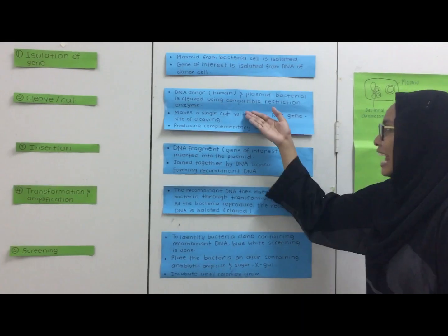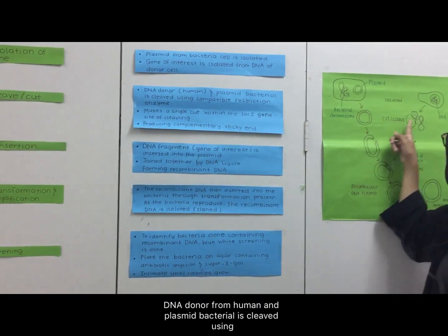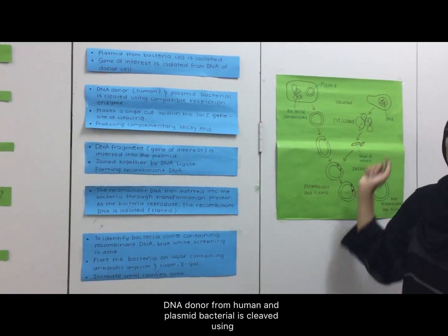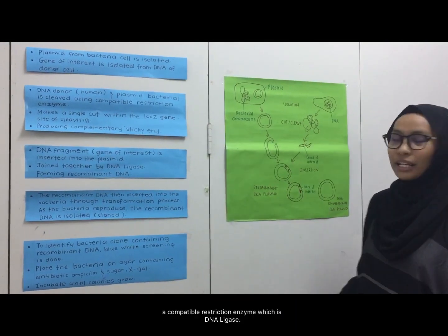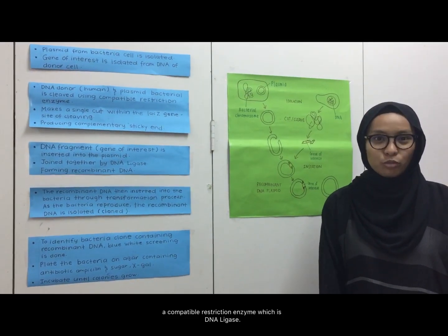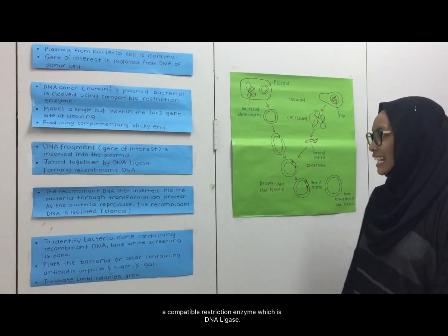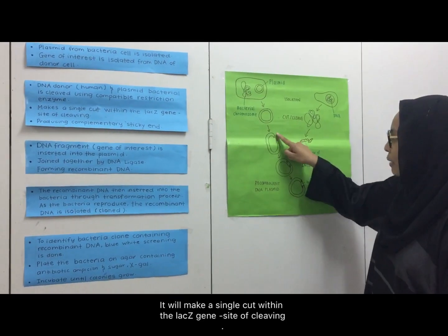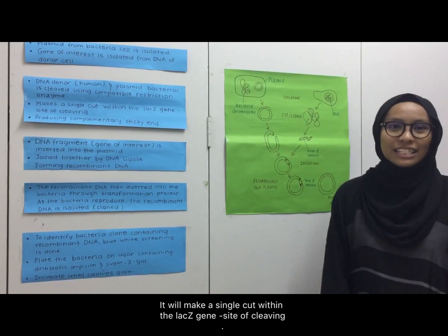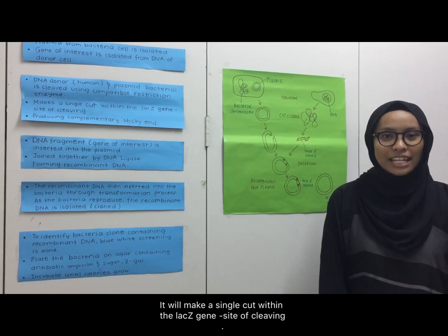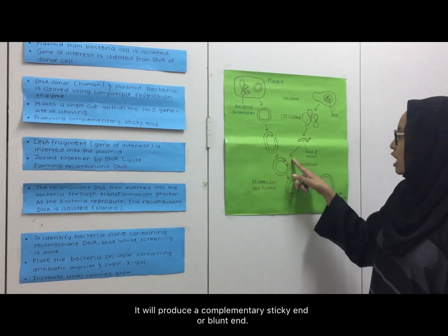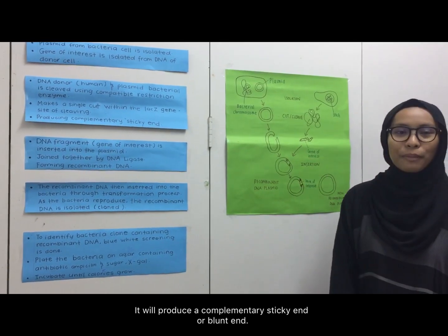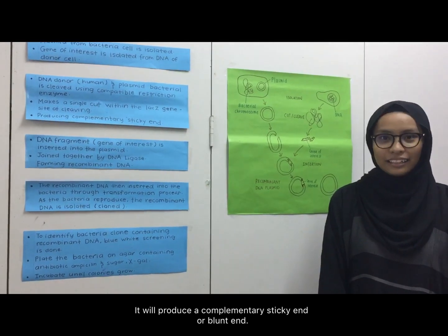The next step is cleave and cut. The DNA donor from human and the bacterial plasmid are cleaved using a compatible restriction enzyme. It will make a single cut within the restriction site during cleaving. It will produce complementary sticky ends or blunt ends.